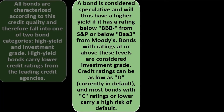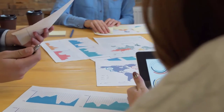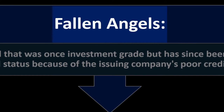A bond is considered speculative — and will thus carry a higher yield — if it has a rating below BBB from S&P or below BAA3 from Moody's. The three major agencies have similar rating characteristics but aren't identical. Bonds rated at or above these levels are considered investment grade. Credit ratings can be as low as D (currently in default), and most bonds with C ratings or lower carry a higher risk of default.